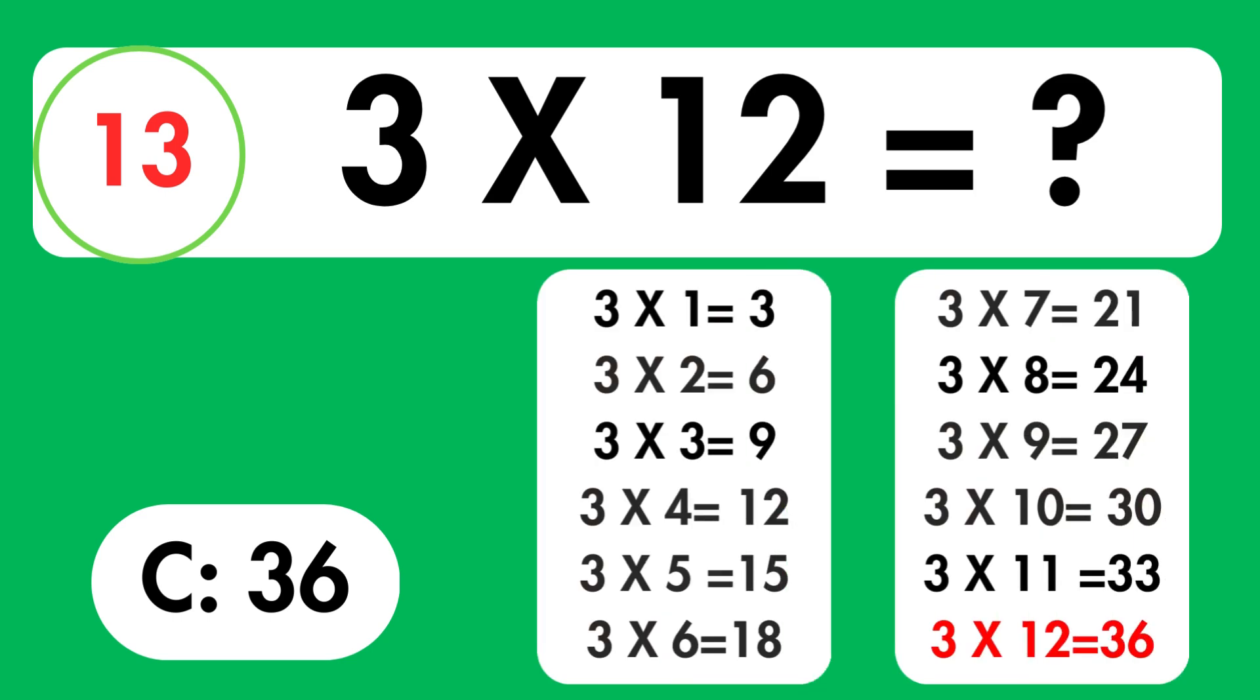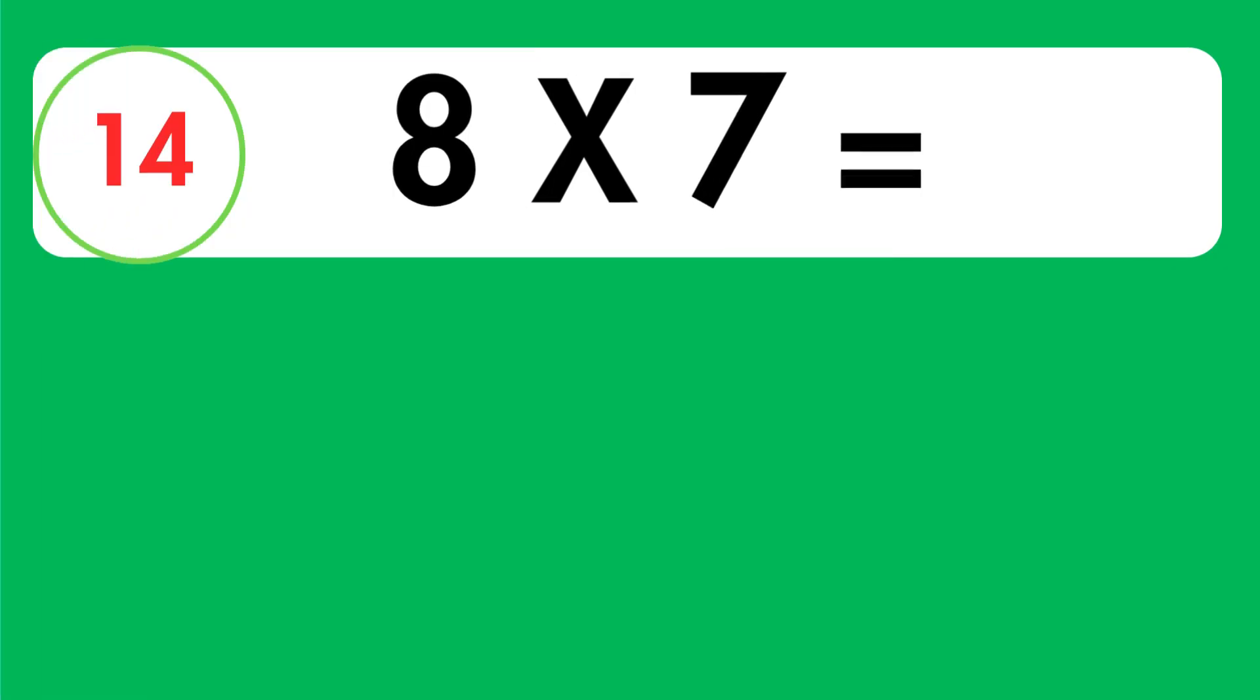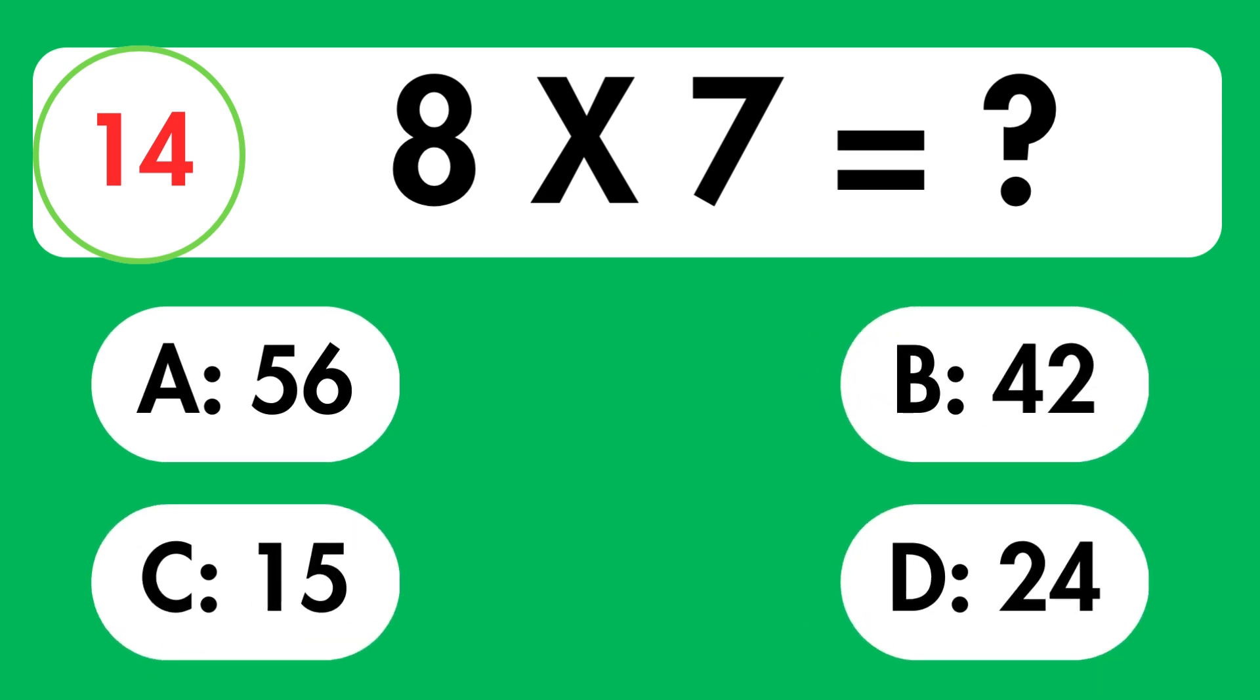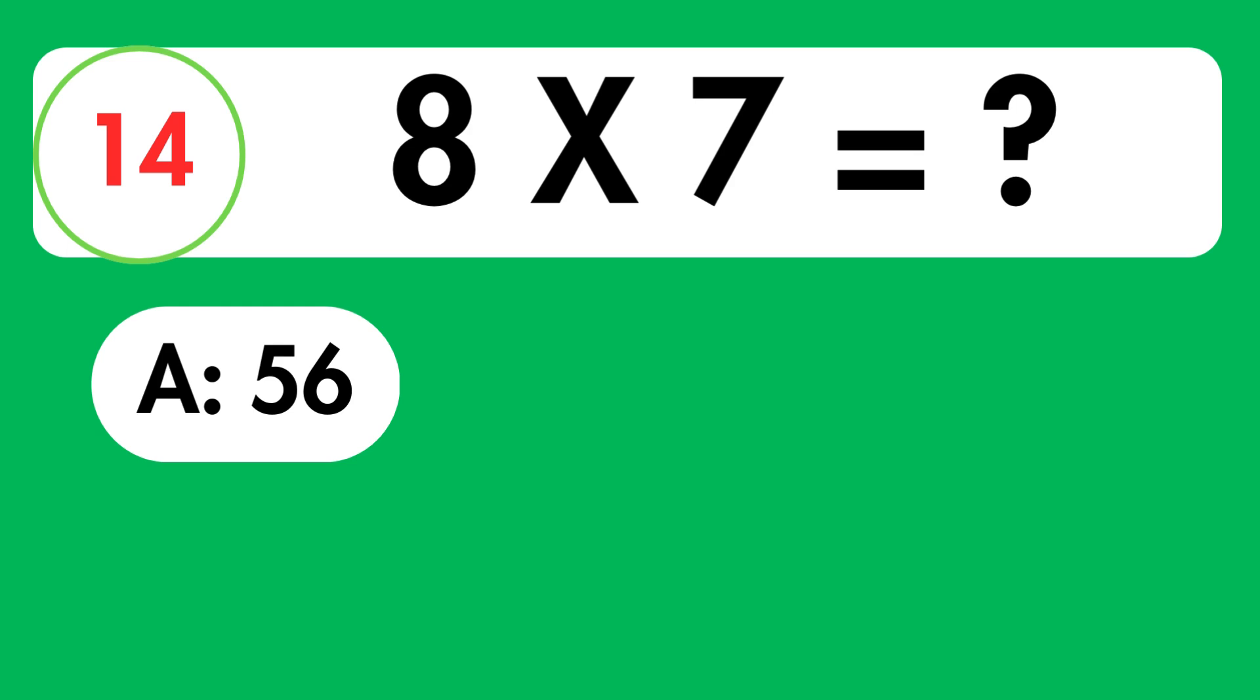3 times 12 is equals 36. Question 14. What is 8 times 7 equals? Time's up. The answer is 56.